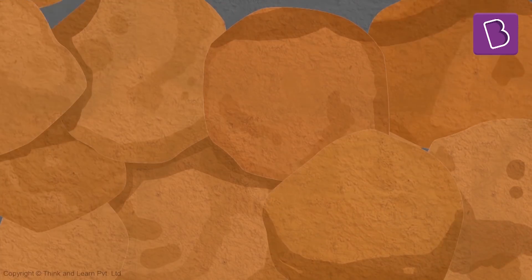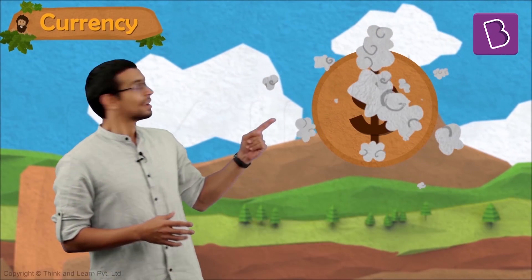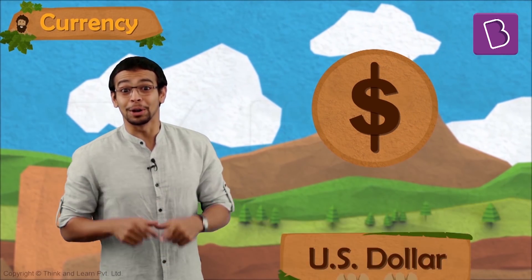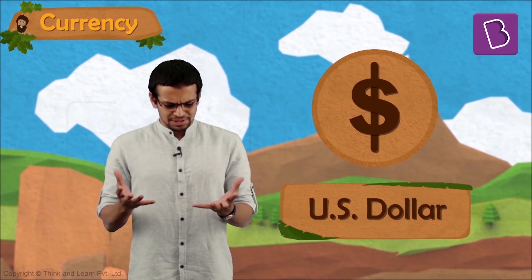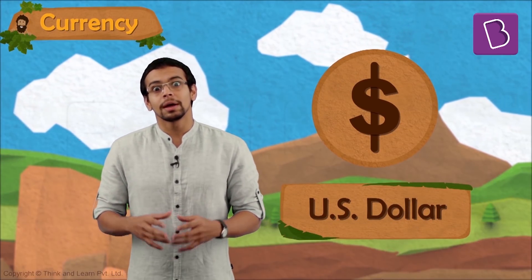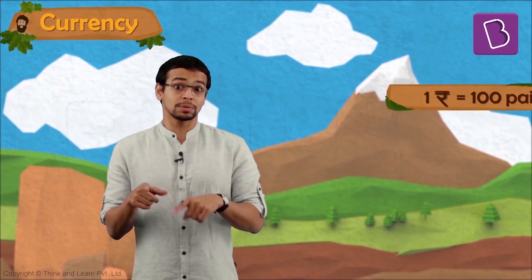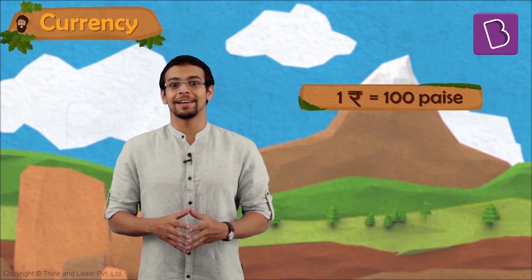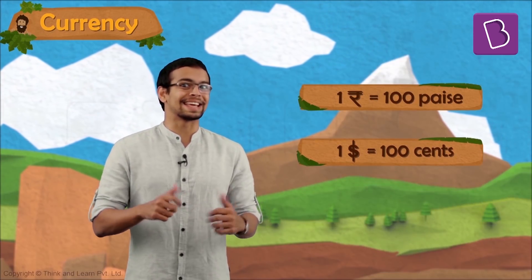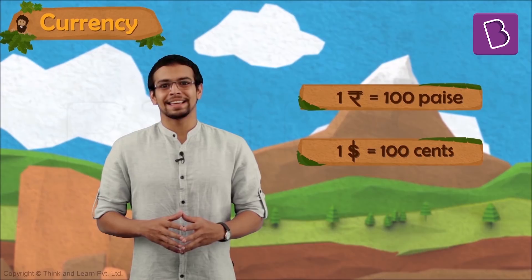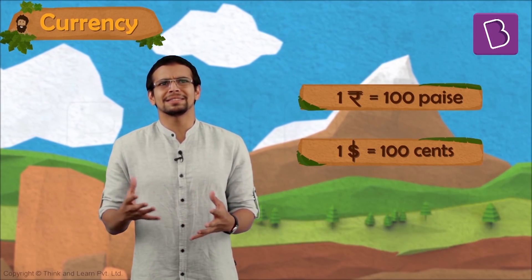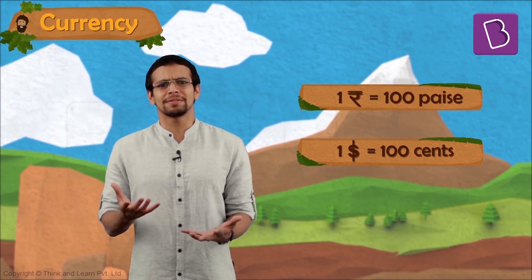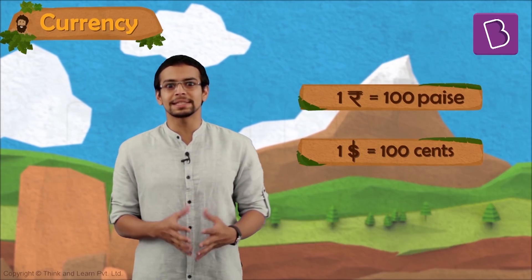One Indian rupee is about 100 paise — I think you're familiar with that. What do they use in the US? That's called a dollar. What's a dollar made of? The rupee was made of paise; a dollar is made of cents. What's the relationship between dollar and rupee? Are they the same or different? What is the relationship between cents and paise?